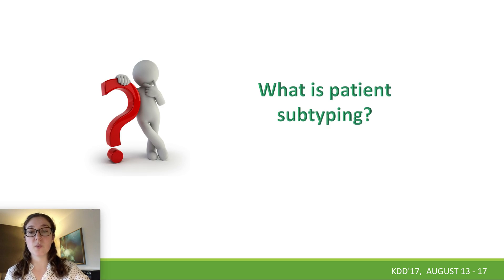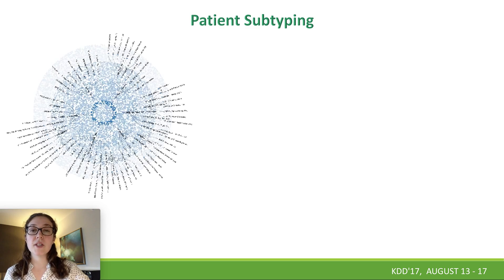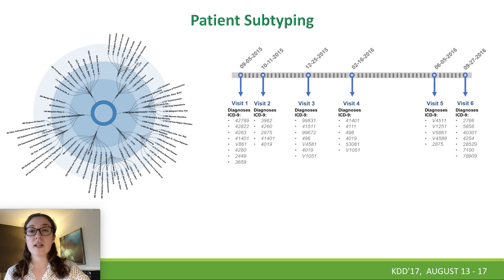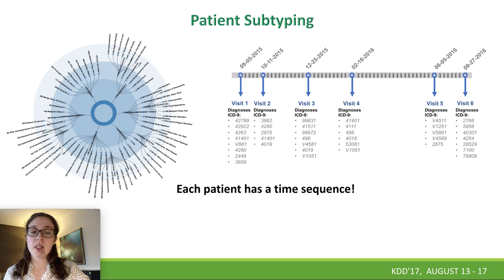Let's start with this question: what is patient subtyping? Patient subtyping can be explained as grouping patients based on their electronic health records. From a machine learning point of view, this problem is an unsupervised learning task. In this problem, each patient has a time sequence where clinical information is collected at each time step.